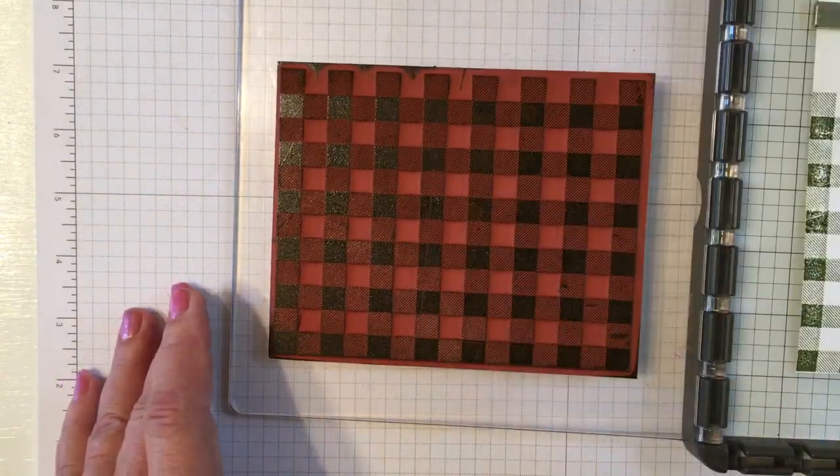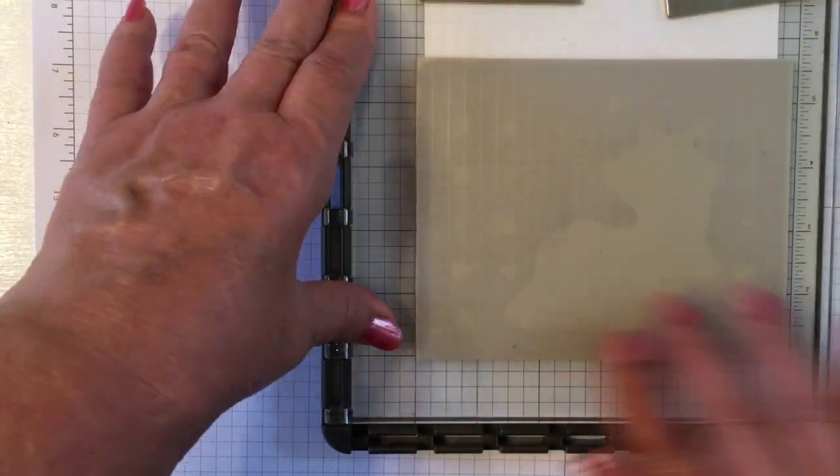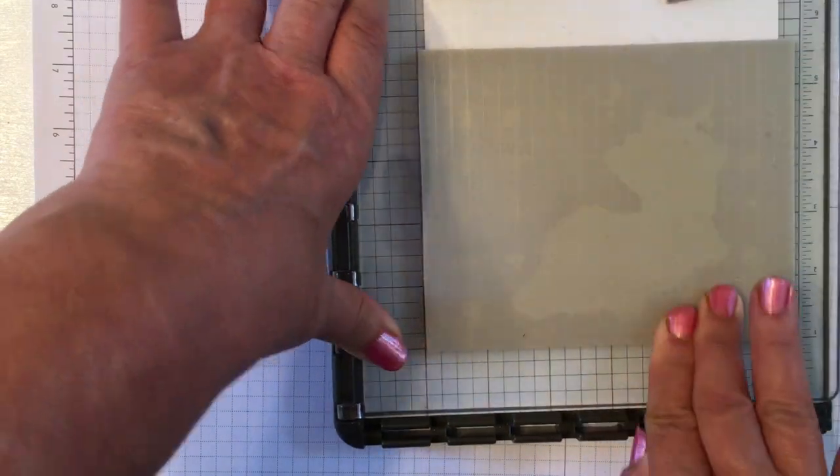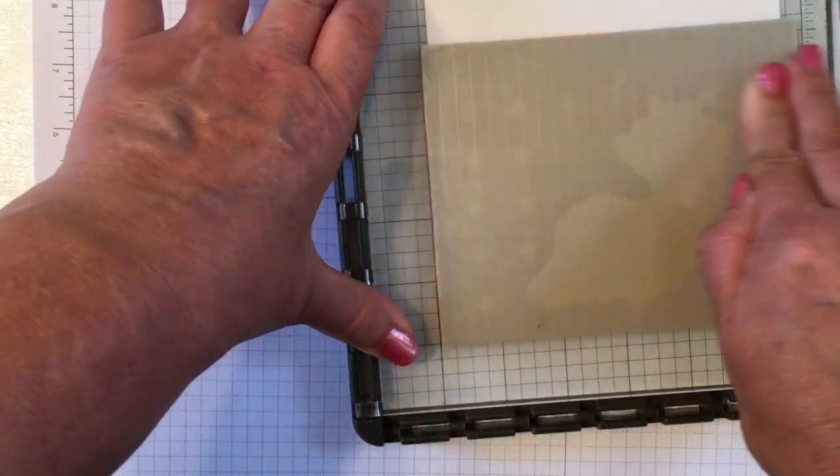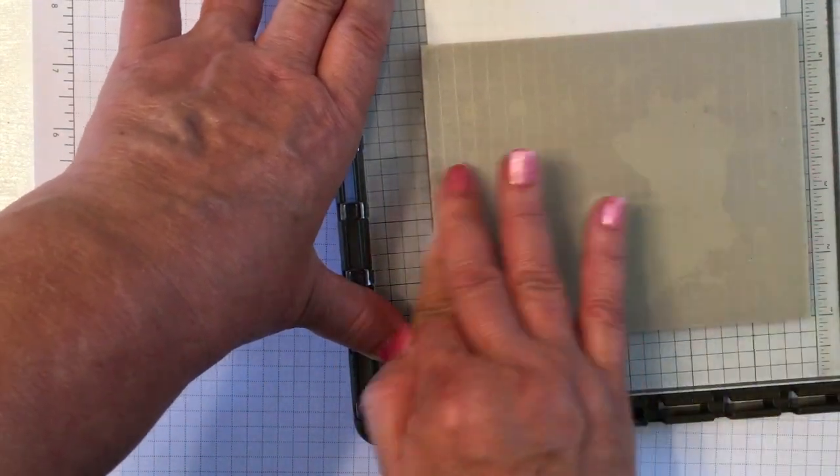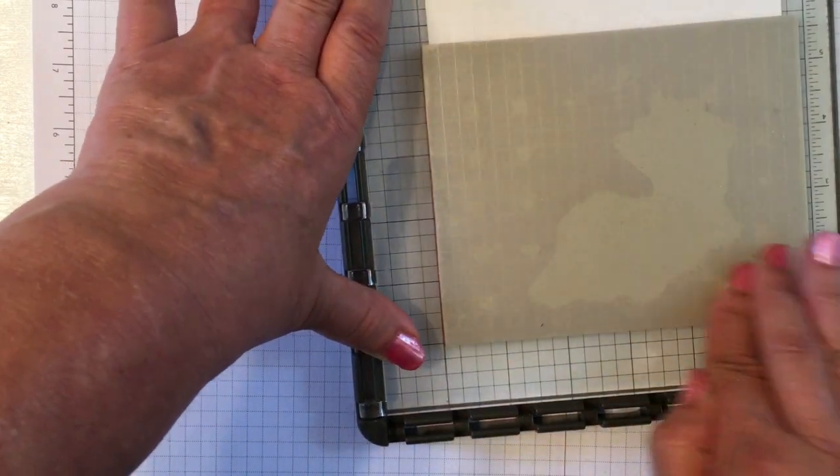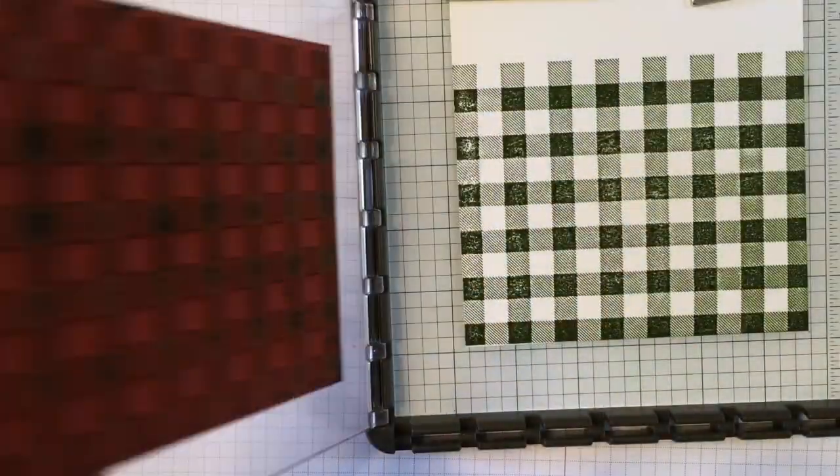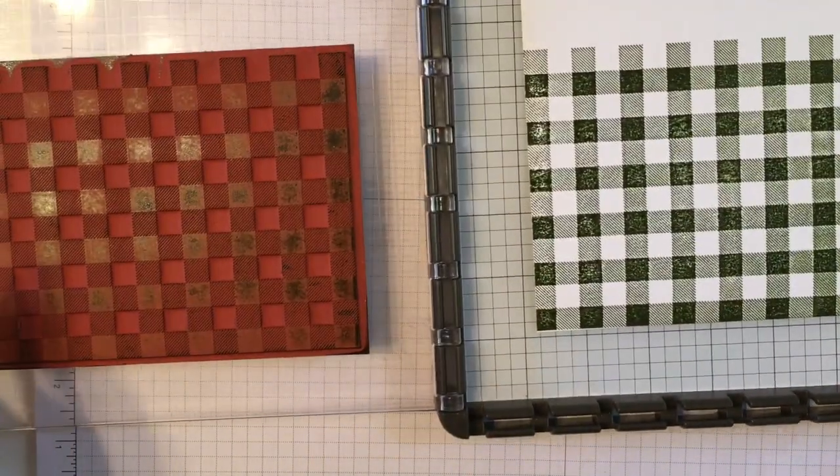Make sure you got your ink on there well and stamp. Another trick if this doesn't work this way with the Stamparatus you can always put a mat under your card to give you a little more cushion when you're stamping and here we're a lot closer.